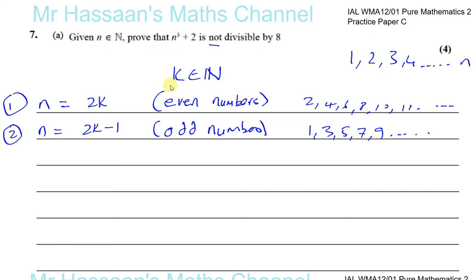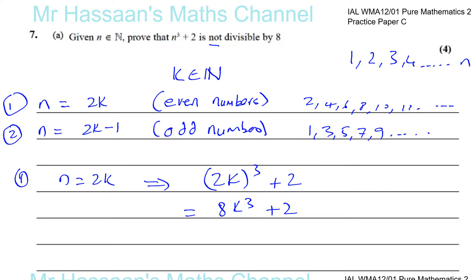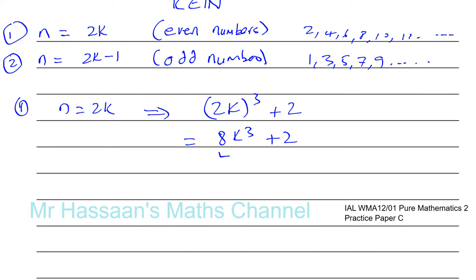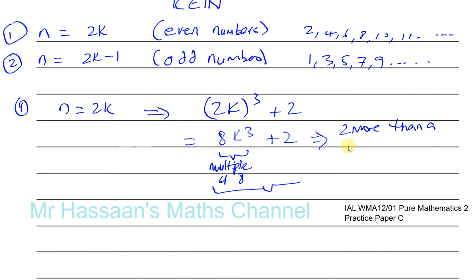Case 1: n equals 2k. Substituting into n cubed plus 2 gives (2k)³ + 2, which equals 8k³ + 2. Now 8k³ is definitely a multiple of 8 because k cubed is an integer and 8 times an integer is a multiple of 8 by definition. So the whole expression is always 2 more than a multiple of 8.